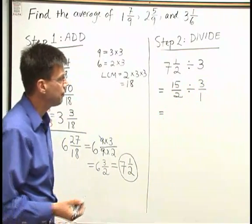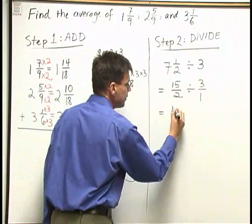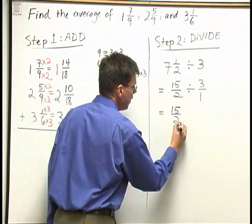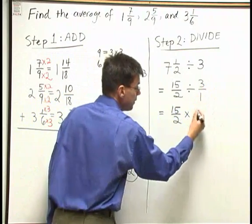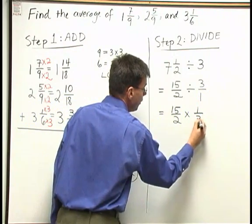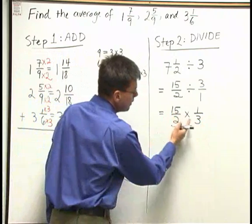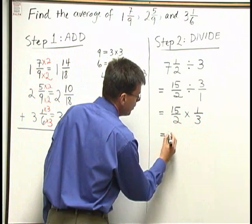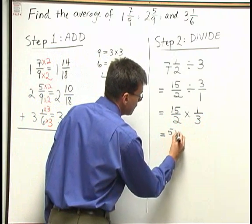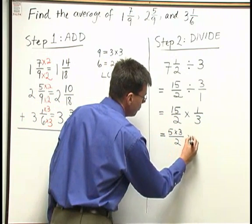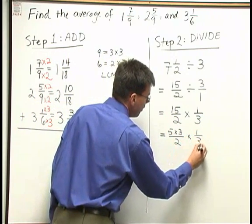Fifteen halves divided by three over one, that's fifteen halves times, I invert the second, times a third. And before I multiply here, let's see if we can cancel. I can rewrite fifteen as five times three, that's over two, times a third.